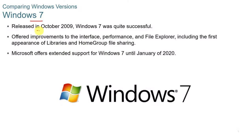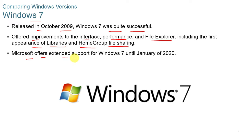Windows 7 was released in October of 2009. It was successful and offered improvements to the interface, performance, and File Explorer, including the first appearance of libraries and home group for file sharing. Microsoft offered extended support for Windows 7 until January of 2020.